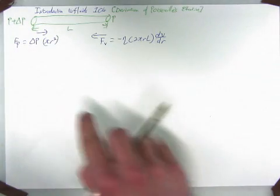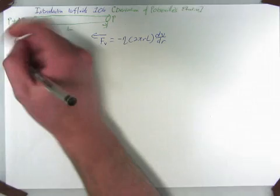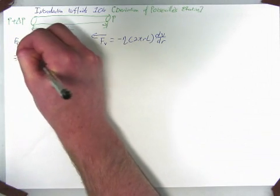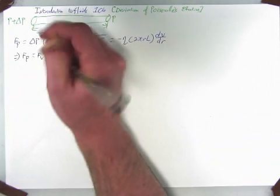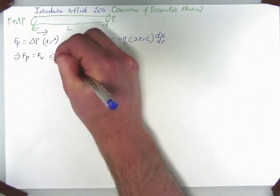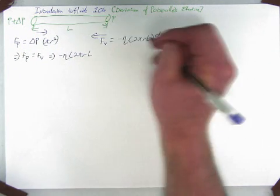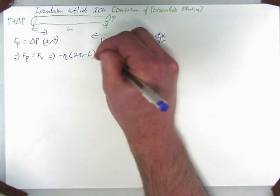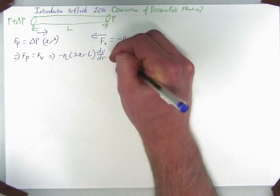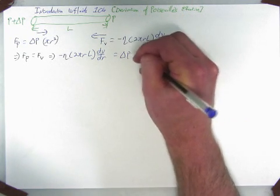Now these two forces must be equal and opposite. Therefore, F_P equals F_v. Minus mu times 2 pi r L dv/dr equals delta P pi r squared.